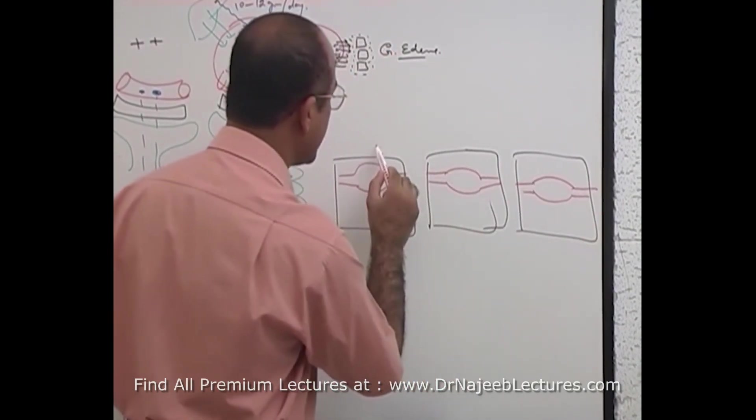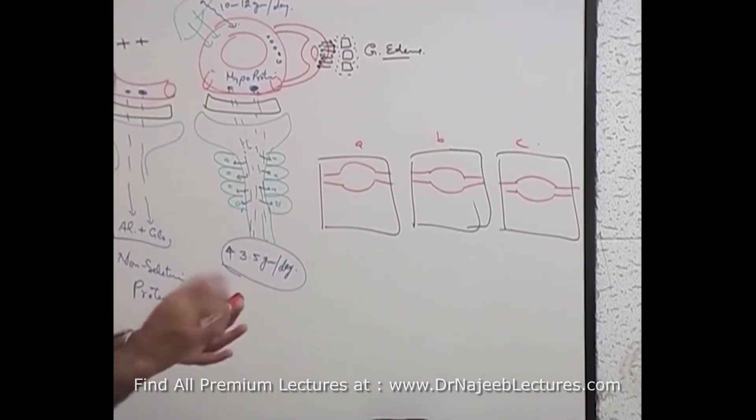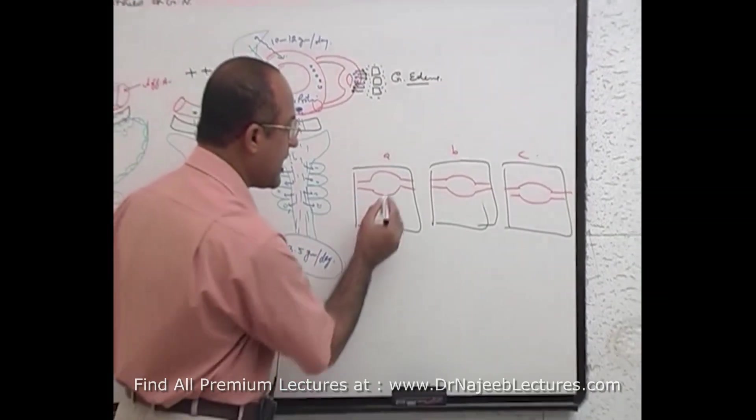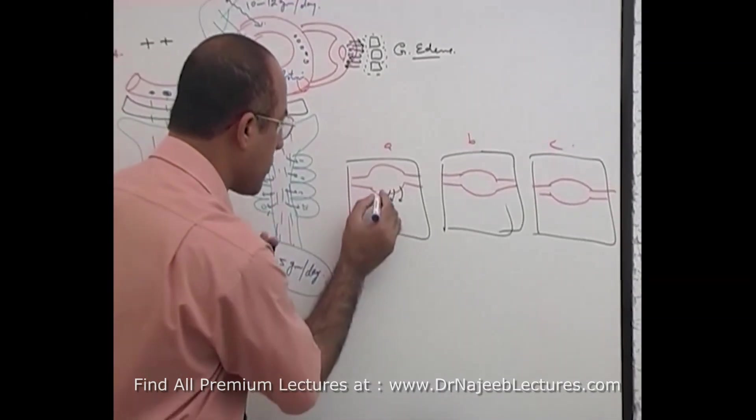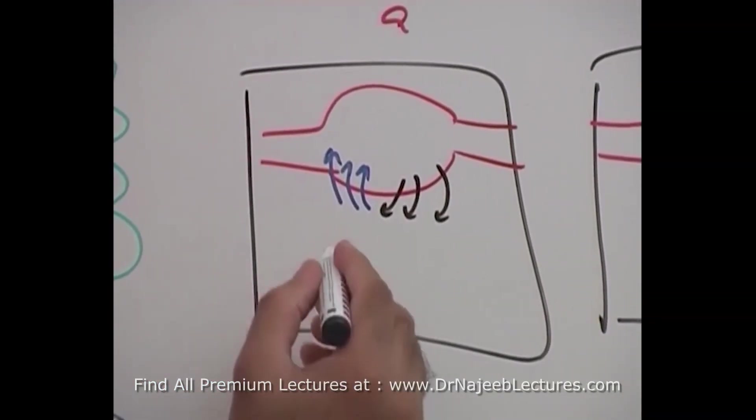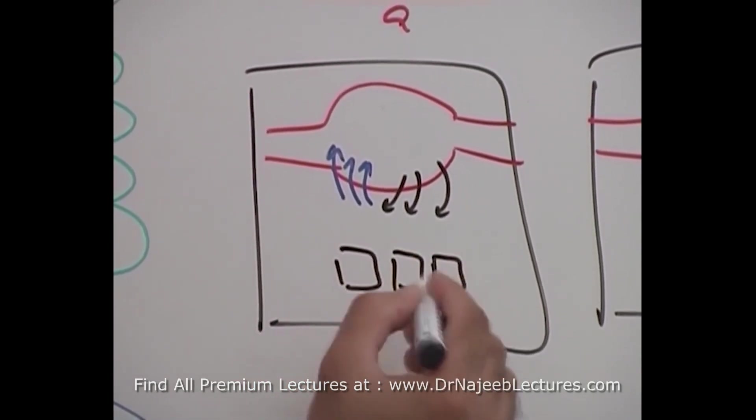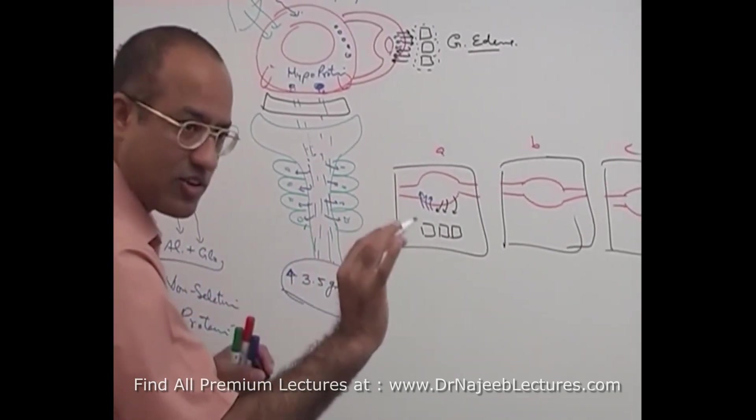These are three patients: patient A, patient B, patient C. Now normally what happens you know it, hydrostatic pressure is high pushing the fluid out and osmotic pressure is pulling the fluid back. In this way fluid is being added from the capillaries continuously to the interstitium and taken back, right?